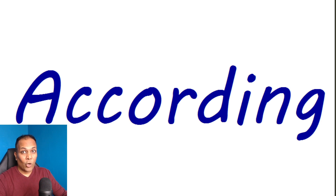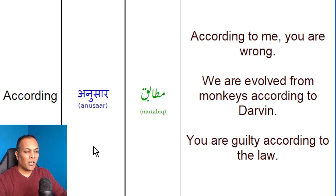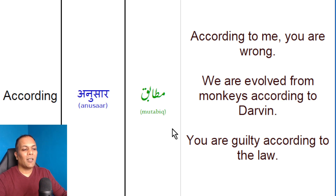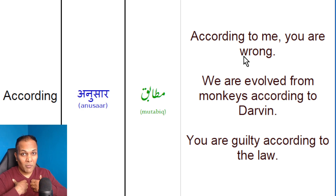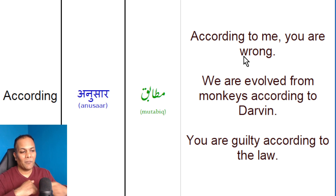According ka meaning hoota hai anusaar, mutabik. Jaysay hum keh sakta hai, According to me, you are wrong. Mayray mutabik, aap galat hain.